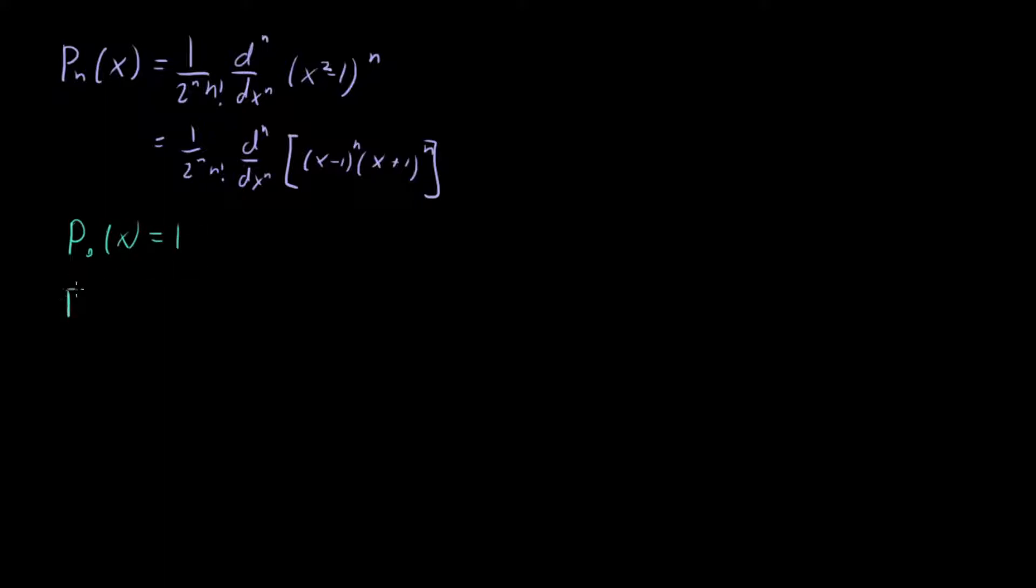What about P sub 1? P sub 1 of x, that's going to be 1 over 2, 1 over 1. Then the first derivative of this guy right here. What's that going to be? That's d/dx of (x^2 - 1). That's going to be 2x. So this is just going to be equal to x.